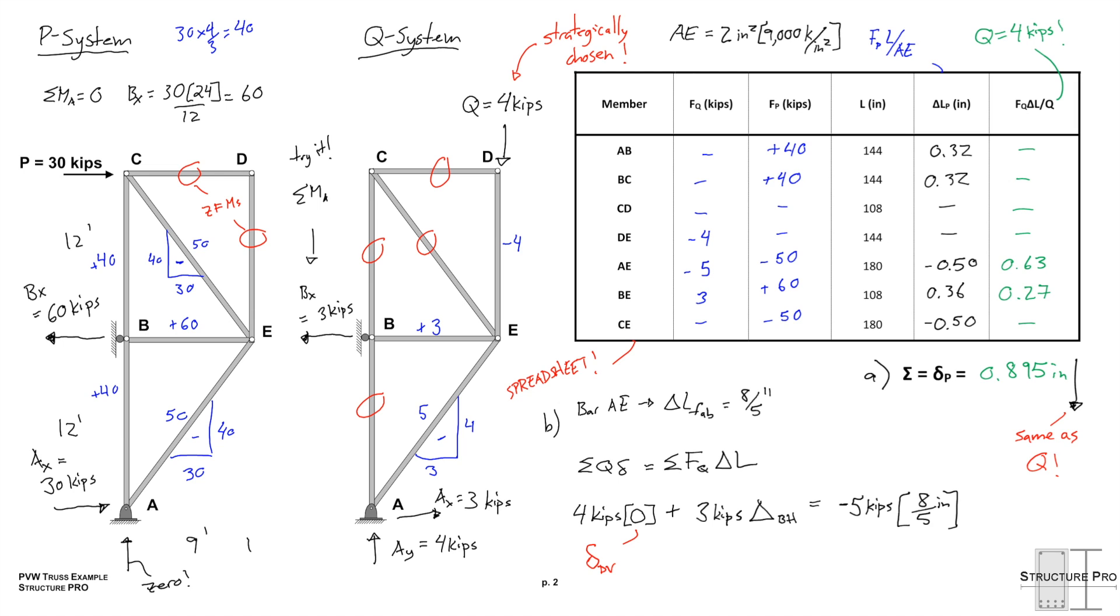This gives us an easy equation to solve. We divide both sides by 3, 5s cancel out, we're left with negative 8 over 3 inches. And this will be to the right, so we can take away the negative just knowing it's in the opposite direction of Bx. So that's our final answer there. Delta BH is 8 over 3 inches.